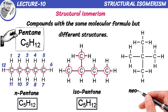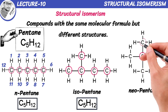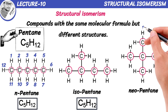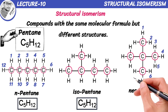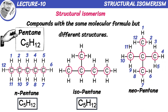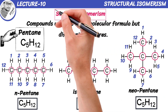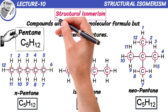Moving on to another structure of pentane: neopentane. This compound is a bit more complex. The central carbon atom is bonded to four other carbon atoms, which are arranged tetrahedrally around the central carbon atom. There are a total of 5 carbons and 12 hydrogens in this structure, so the molecular formula is C5H12. All these compounds have the same molecular formula but different structures, and are known as structural isomers of pentane.